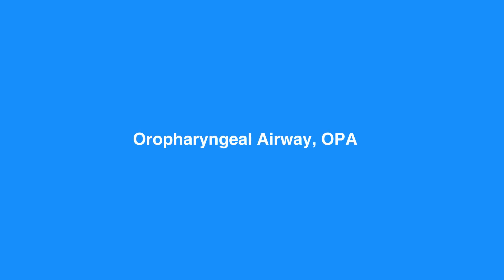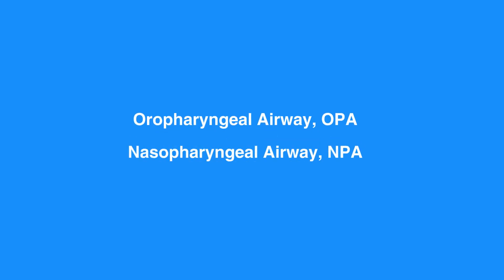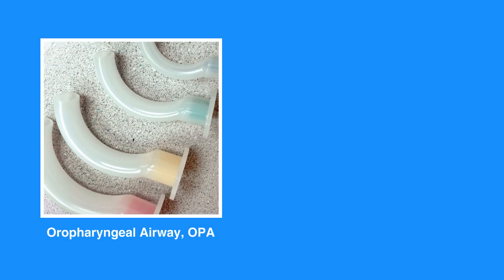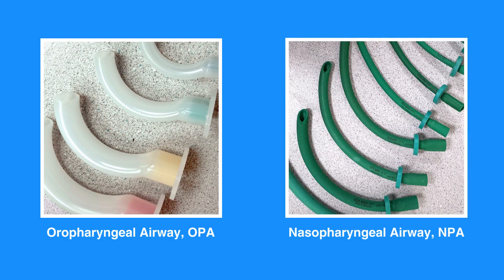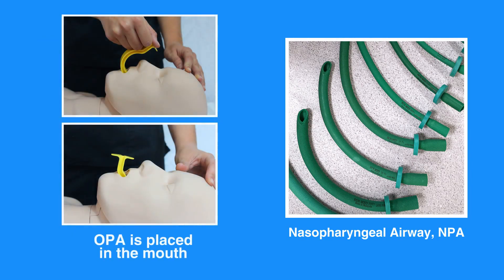Basic airway equipment includes the oropharyngeal airway, or OPA, and the nasopharyngeal airway, or NPA. The primary difference between an OPA and an NPA is that an OPA is placed in the mouth, while an NPA is inserted through the nose. Both airway equipment terminate in the pharynx.